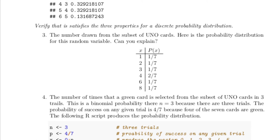So if the random variable is what is the number on the card picked at random from this subset, then the possible values are one, two, three, four, six, or eight. There's one chance in seven of getting a one, a one chance in seven of getting a two, a one chance in seven of getting a three, but two chances in seven of getting a four, and one chance in seven each of getting a six or an eight.